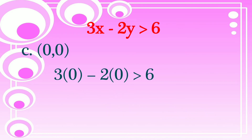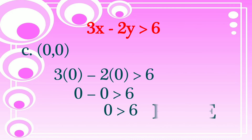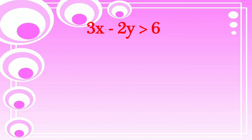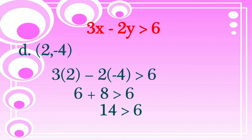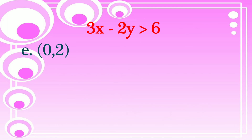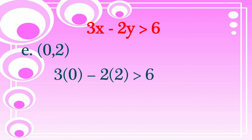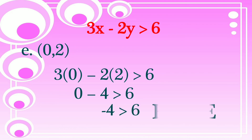For letter C, (0, 0): substituting gives 0 is greater than 6 — false, so it is not a solution. For letter D, (2, negative 4): x is 2 and y is negative 4. Substituting: 6 plus 8 equals 14, so 14 is greater than 6 — true. So (2, negative 4) is a solution of 3x minus 2y is greater than 6. For letter E, (0, 2): x is 0, y is 2. Substituting gives negative 4 is greater than 6 — false, so letter E is not a solution.